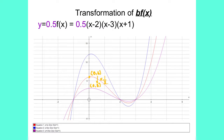If we now draw the graph of y equals 0.5 f of x, which is 0.5 times x minus 2, x minus 3, x plus 1, you can now see that the point 0, 6 has moved to 0, 3. The x-coordinate remains the same. The y-coordinate has been multiplied by a scale factor of a half or 0.5. So the effect of b on f of x is to multiply the y-coordinate by the value b. The x-coordinate remains the same.